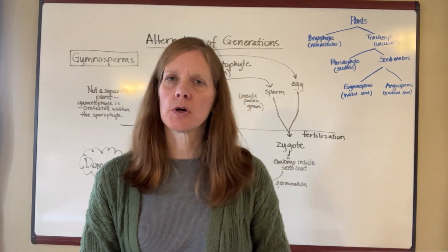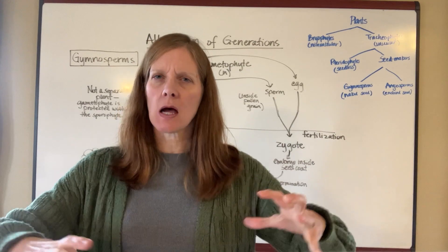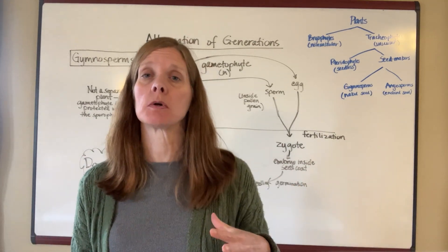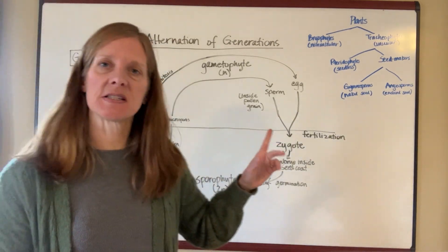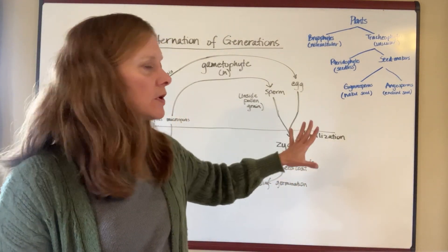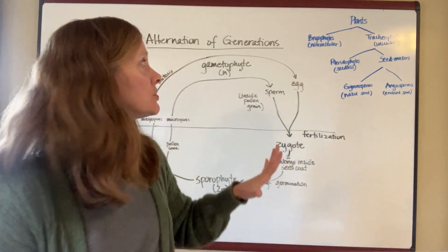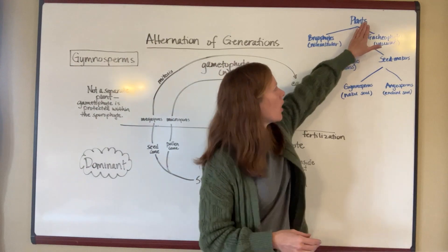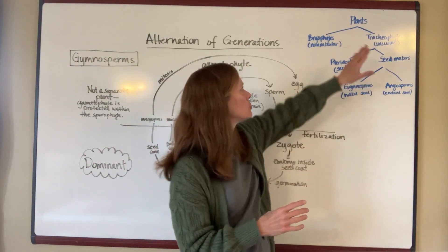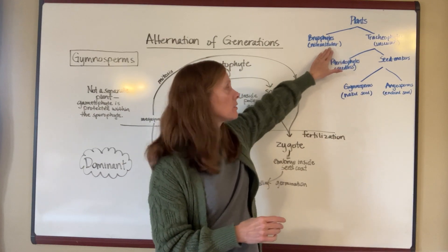As we move forward in this chapter on plants, I wanted to back up for just a minute to make sure you were getting the big picture of where we're going here. This is the same branching diagram that I told you was on the last page of your lesson plans, but I threw it up here just because I wanted to draw your attention to it. So if I have all of the plants together, I can subdivide plants into those that are vascular and those that are non-vascular.